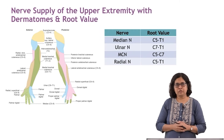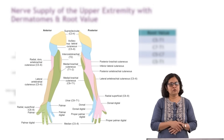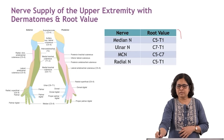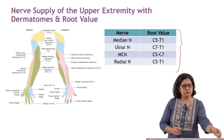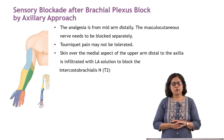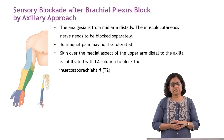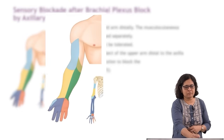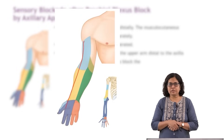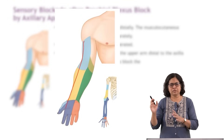The examiner may ask you to demonstrate the nerve supply of the upper extremity with dermatomal values — please get these from your textbook clearly. Regarding sensory blockade from the axillary approach, analgesia covers from the mid-arm distally. The musculocutaneous nerve needs to be blocked separately, which is a limitation of this block.